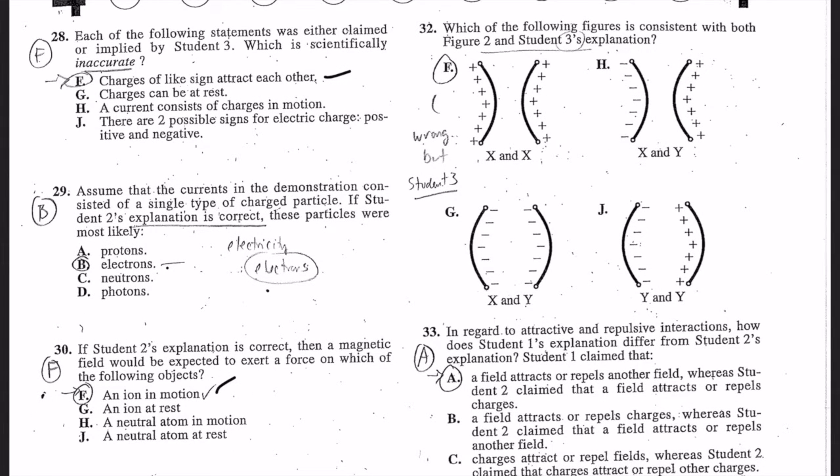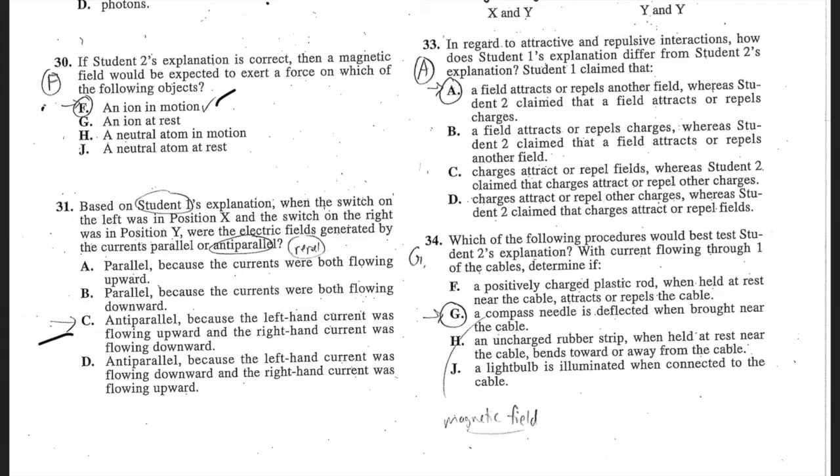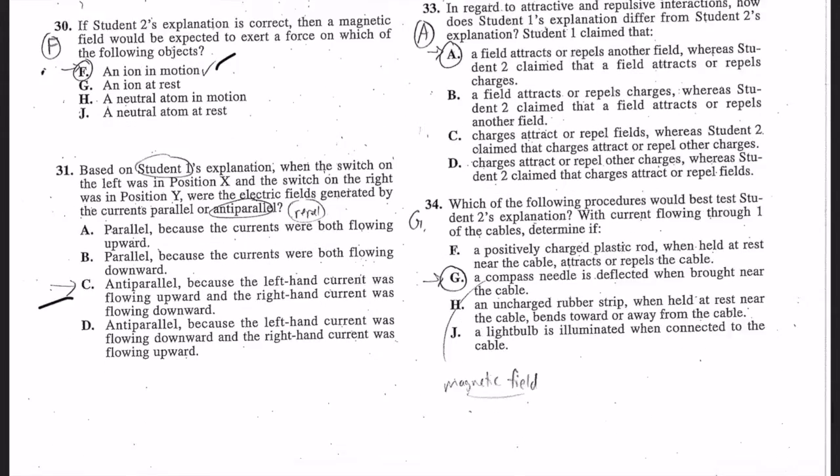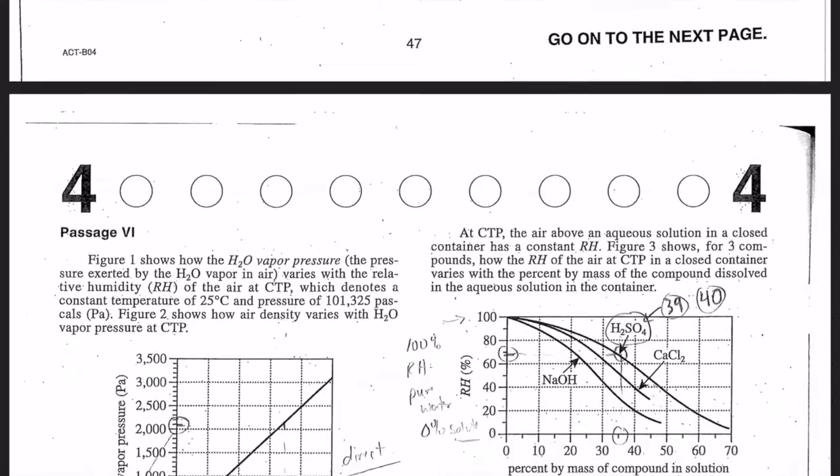Number 33: student one versus student two. Student one is fields, and student two is ions, particles. Number 34: a compass needle would be deflected by a magnetic field. You kind of have to know by history of just you being in North America that compasses work by magnetism.